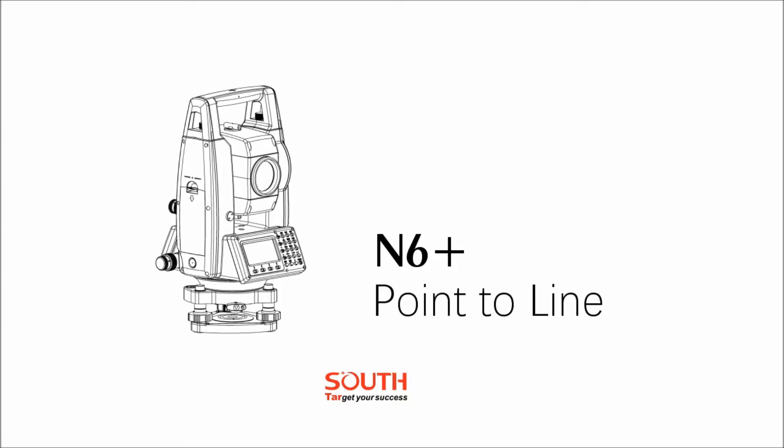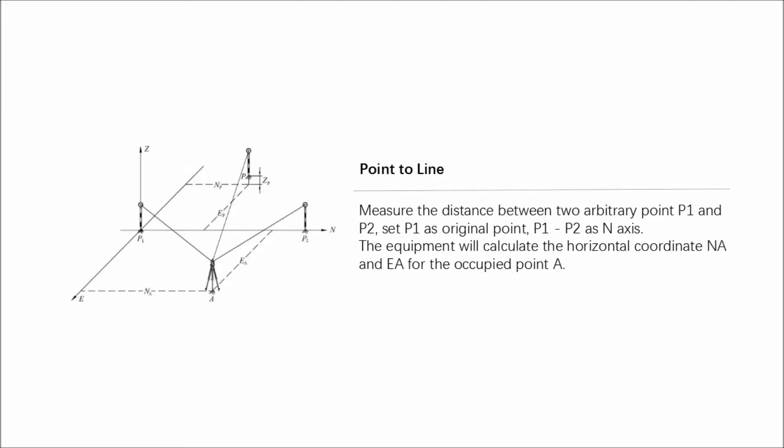Measure the distance between two arbitrary points P1 and P2, set P1 as original point, P2 as N axis. The equipment will set up a coordinate system based on P1 and P2, which calculates the horizontal coordinate NA and EA for the occupied point.